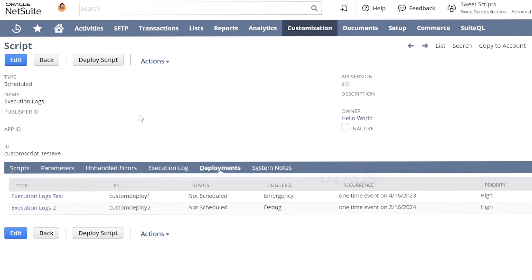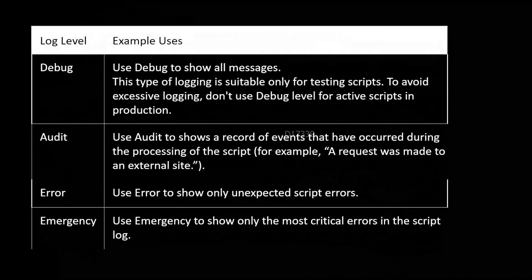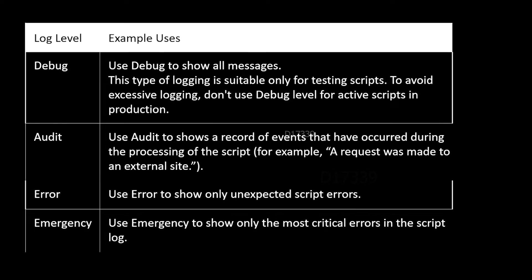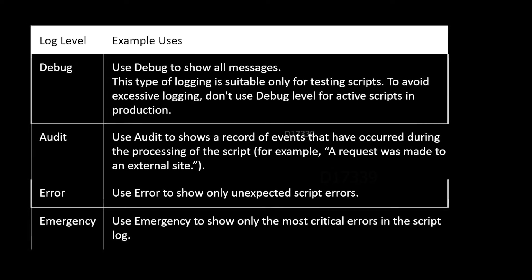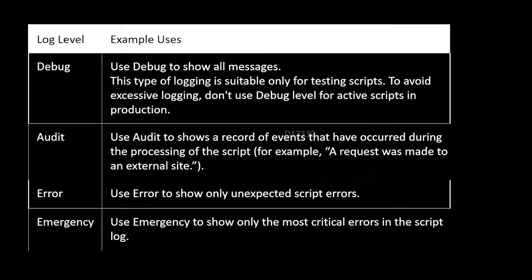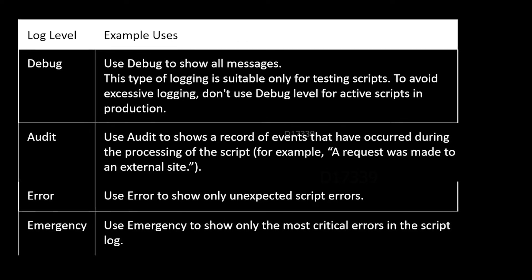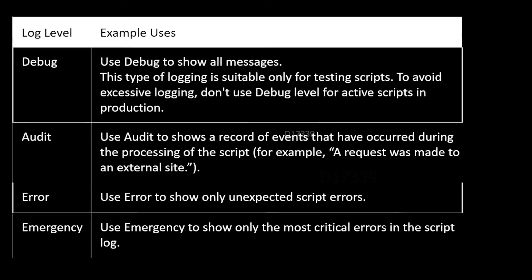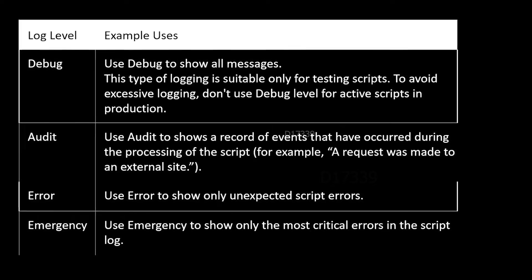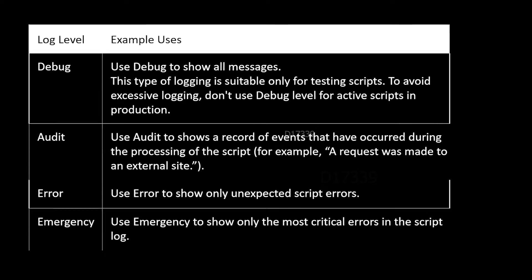Before executing the script, let's understand what log.debug and log.audit are and when to use these different APIs. The debug log level is used by developers when they start developing their code and want to log most variables for testing purposes. The audit log level is used when you want to log specific variables and keep a watch on them. Log.error is used in catch blocks to log unexpected errors, and log.emergency is for the most critical areas.